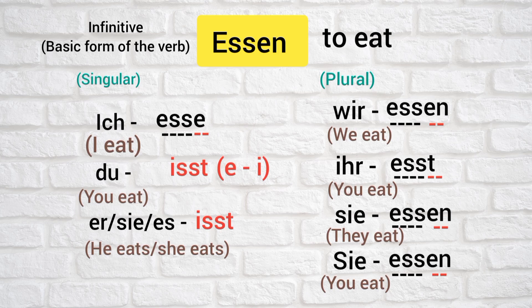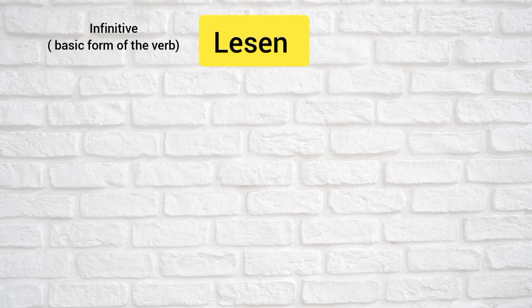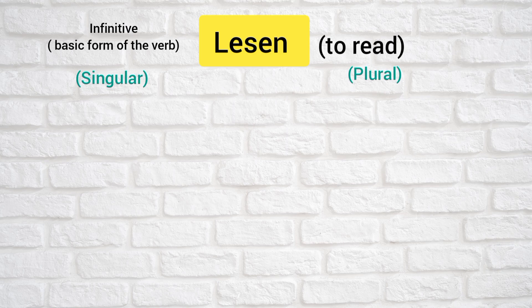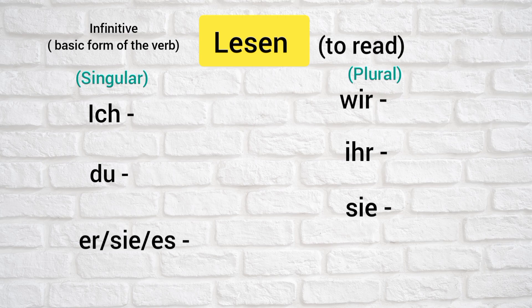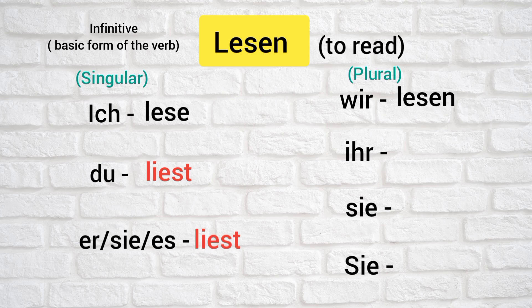Let's move on to lesan. Lesan means to read. We have the same personal pronouns: ish, do, air zs, via, ear, z, z. Let's conjugate lesan: ish laser, do least, air zs least, via lasan, yere lasst, sie lesan, sie lesan.